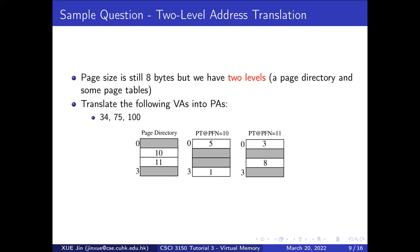Now we look at a more complicated case with two levels of page tables. We still assume the page size is 8 bytes, but now we have two levels: the first level is the page directory, and the second level are the page tables. We want to translate virtual addresses 34, 75, and 100 into physical addresses. Both the page directory and the page tables have 4 entries. A page directory entry points to a second-level page table — for example, entry 1 points to the page table at physical frame number 10 — while a page table entry gives the physical page frame number.